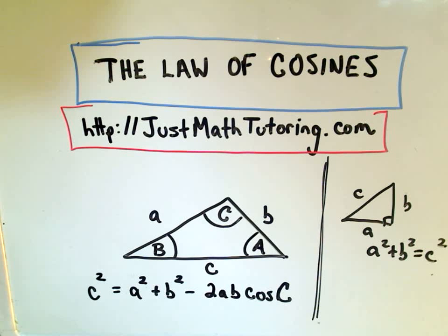This video is going to be about what's called the Law of Cosines. I'm sure a lot of people know the Pythagorean Theorem, which says if you have a right triangle, you can relate the two sides by squaring them, adding them together, and that'll equal the hypotenuse squared.